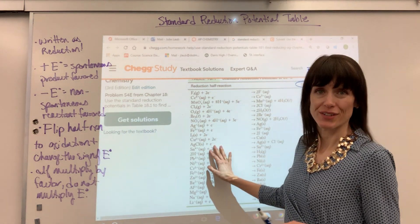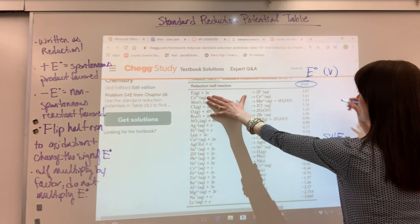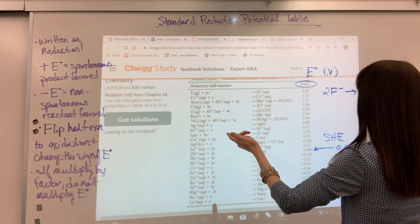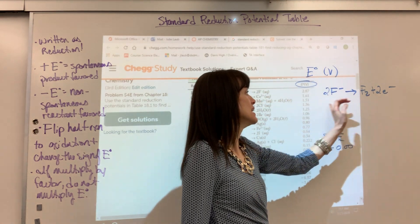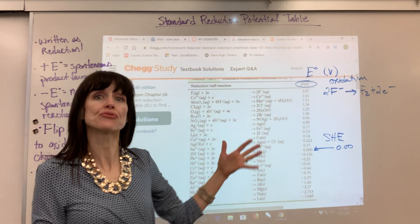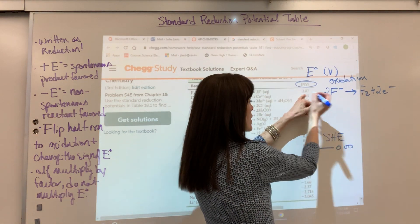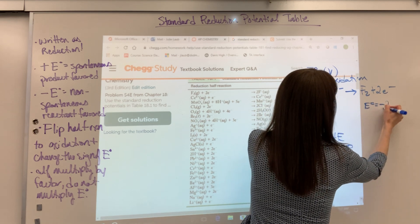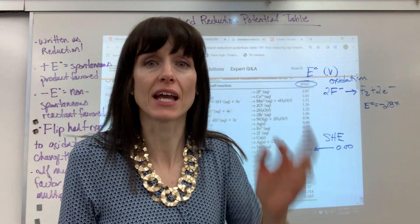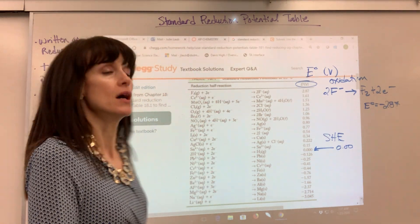Now, these are all written as reduction, but we could flip this and write it as oxidation. So for example, let's take our fluorine. If I flip it, you have two fluorine now as the reactant — that's the aqueous — yielding the fluoride gas plus two electrons. The two electrons are on the product side; this is written as oxidation. When you flip the half reaction from reduction to oxidation, all you have to do is change the sign on E. Instead of positive 2.87, the E becomes negative 2.87. Just switch the sign — similar to enthalpy, delta H, when we flip chemical reactions.